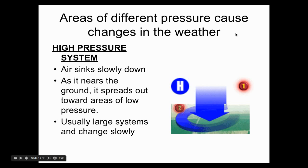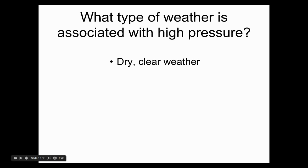If you look at a weather map, you may see a capital H or capital L, indicating high pressure systems and low pressure systems. High pressure systems are a good indicator of temperature and weather in that area. The air sinks down, and as it nears the warmer ground, those molecules spread out toward areas of low pressure. High pressure systems are very large, change slowly, and bring dry, clear weather.